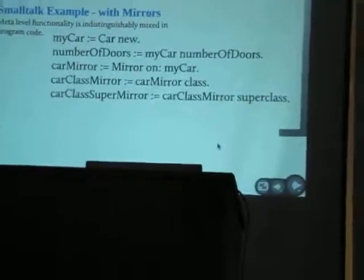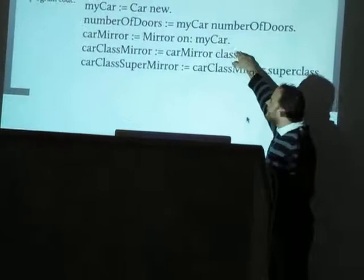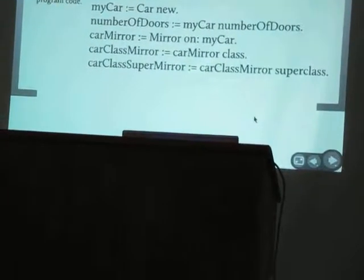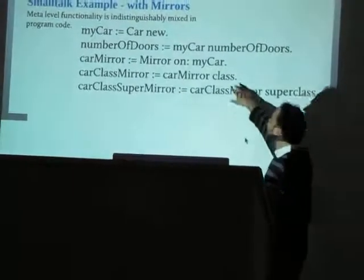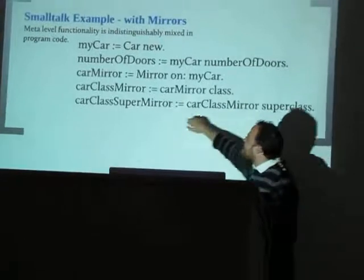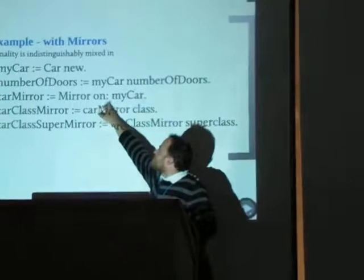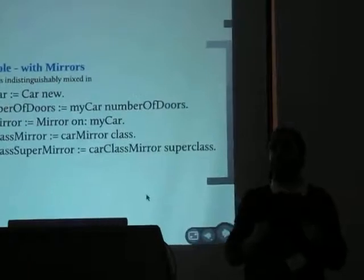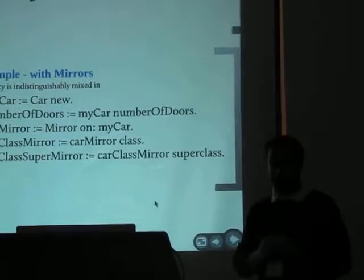Here is the same example in Smalltalk using mirrors. The difference is that when I am jumping from the base level to the meta level I do that by invoking the mirror on the object. Behind this I can have multiple implementations, or I can actually forbid the developer to use reflection and discard reflection altogether.